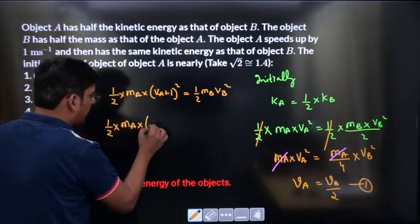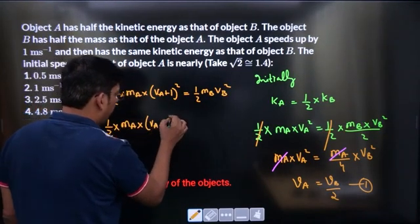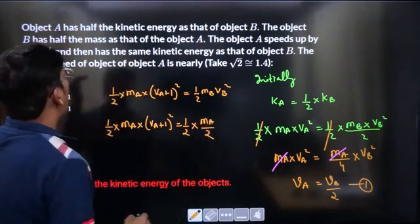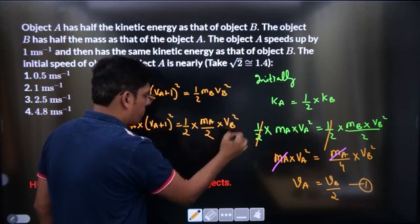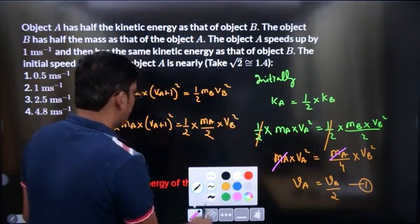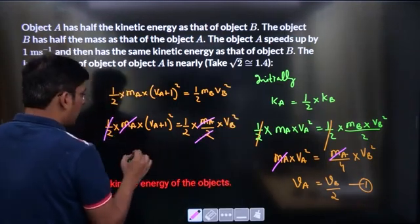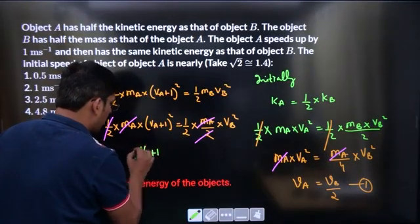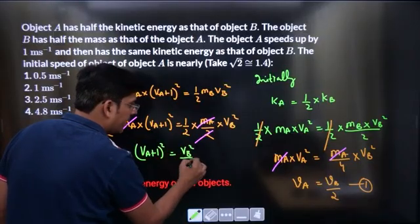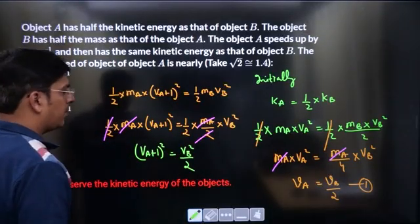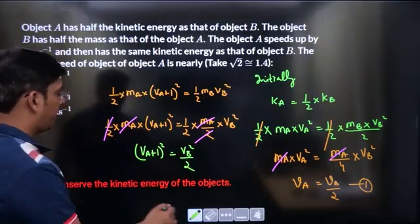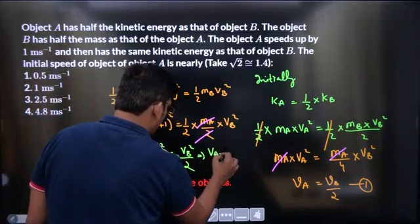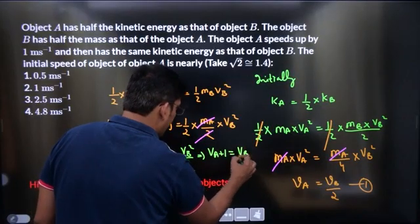This is MA, this is VA plus 1 whole square, and this is MA by 2 into VB square. Now MA gets cancelled, 2 gets cancelled. From here we are getting VA plus 1 whole square equals VB square divided by 2.